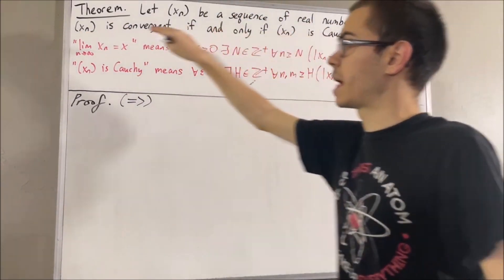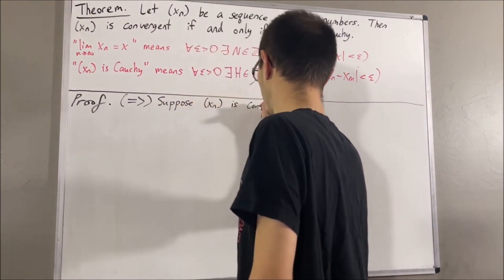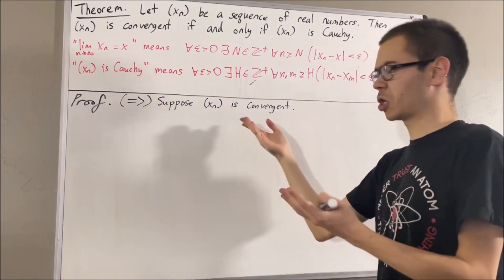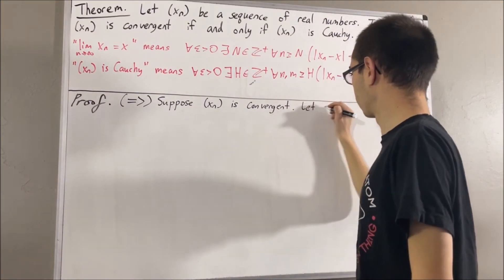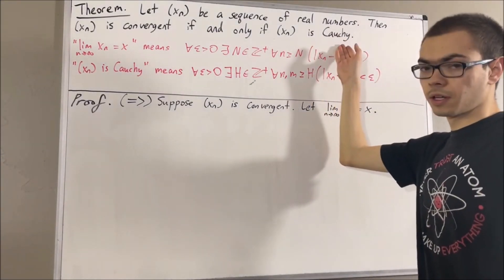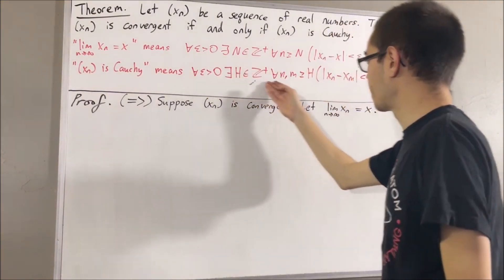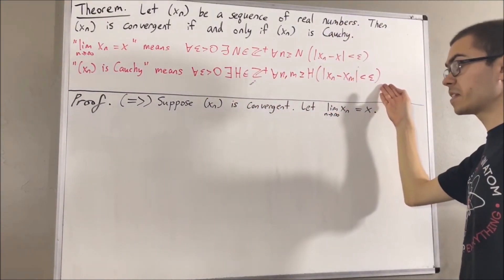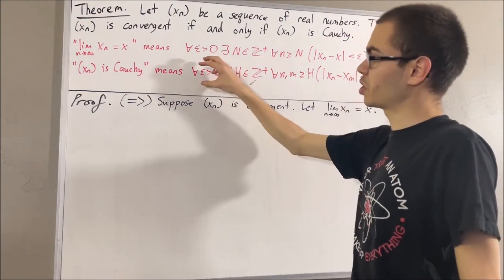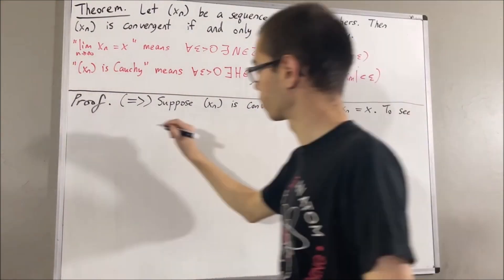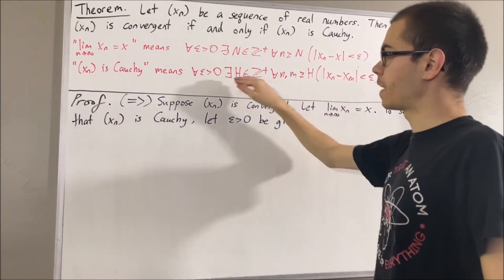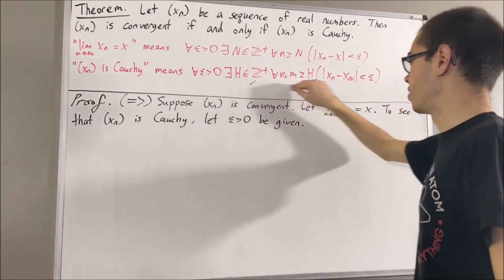So let's suppose that xn is convergent. This means that xn converges to some value, and I'm going to call that value x. The whole goal is to prove that xn is Cauchy, which means we want to prove that this second statement is true. And since we're trying to prove a statement about every epsilon greater than zero, let's give ourselves an arbitrary epsilon greater than zero. From here, we want to find a positive integer H such that this is true.